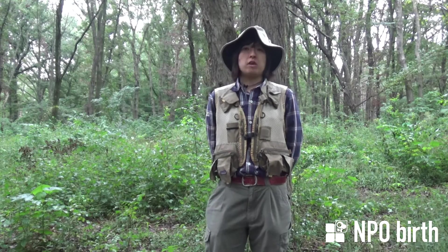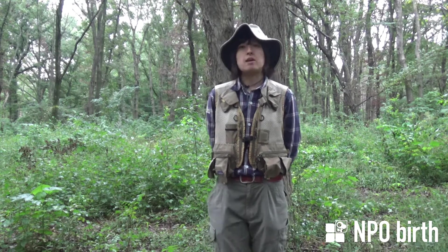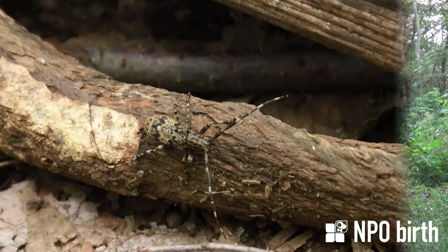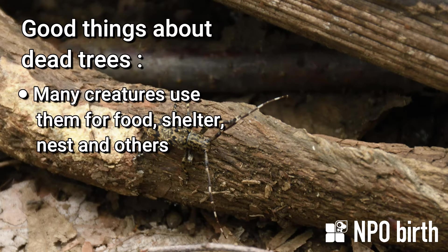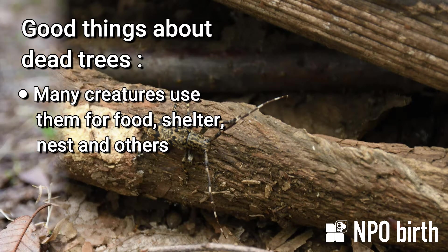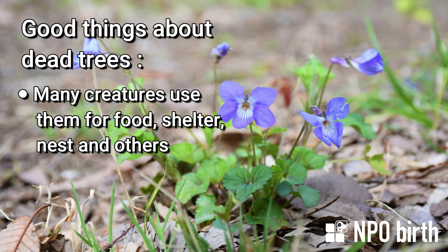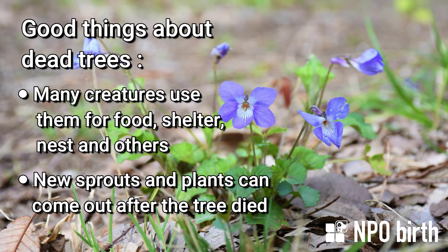Because the Oak Ambrosia Beetles can cause serious accidents in the park doesn't mean they are bad creatures. There are some good things that happen when old trees die. Many creatures use dead trees for food, shelter, nests, and other purposes. Thanks to decomposers, dead trees can fall and become soil. Also, after a tree dies and falls, sunlight comes in from the space where the tree was, and new sprouts and plants that like bright places can grow. Regeneration of the forest is very natural and necessary.